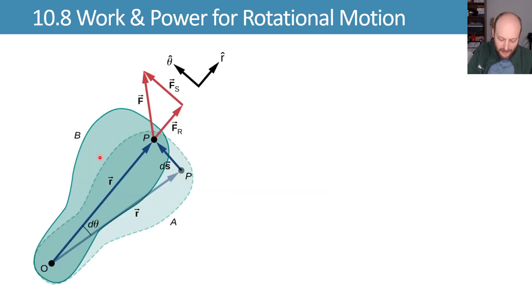If we have a body here at position A and then it moves to position B during some time period, we can describe this motion with this displacement s which is equal to theta cross r. This is from our knowledge of rotational motion, this is one of those relationships.